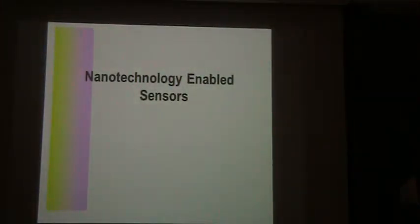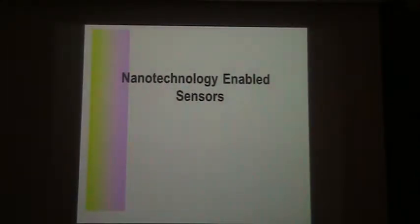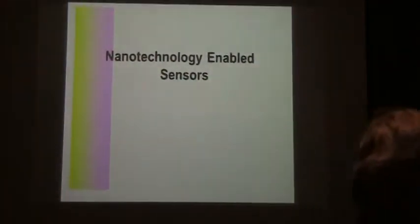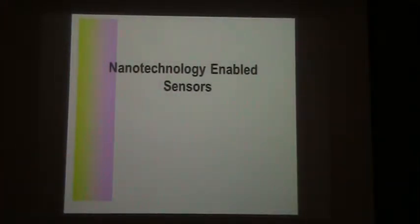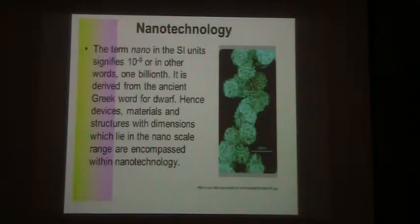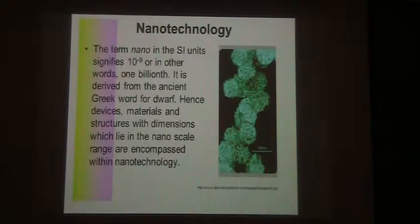Nanotechnology-enabled sensors — because this is the correct term, not nanosensors. Nanosensors implies dimensions, but in the case of thin films they are not nanosensors by themselves. So let's start from the beginning. The term nano in SI units is 10 to the minus 9 — in other words, one billionth. It is derived from the ancient Greek word for dwarf.